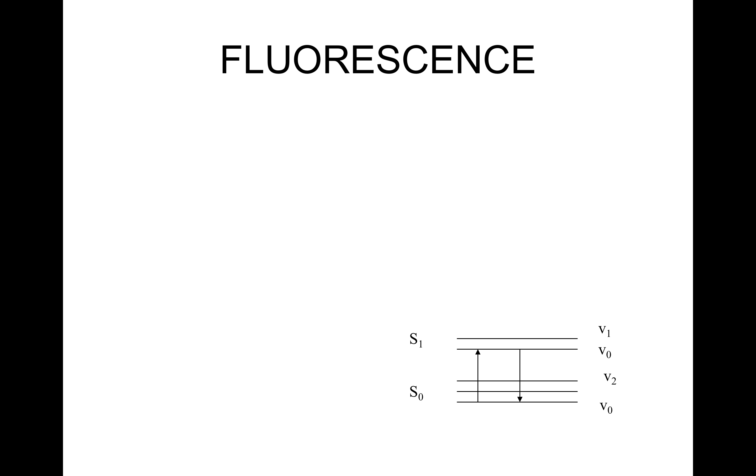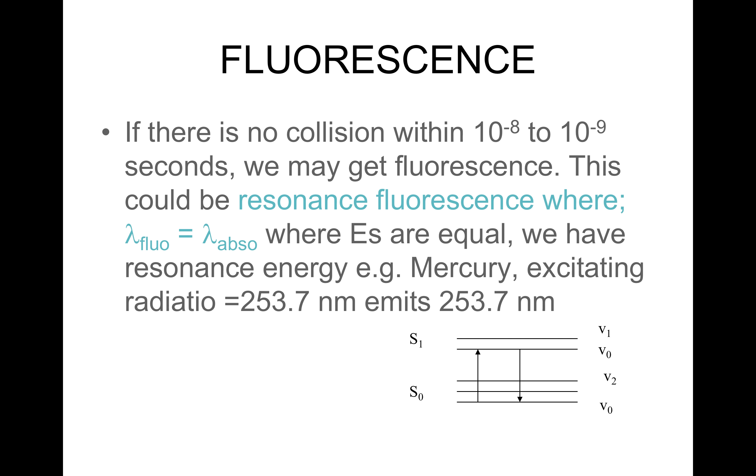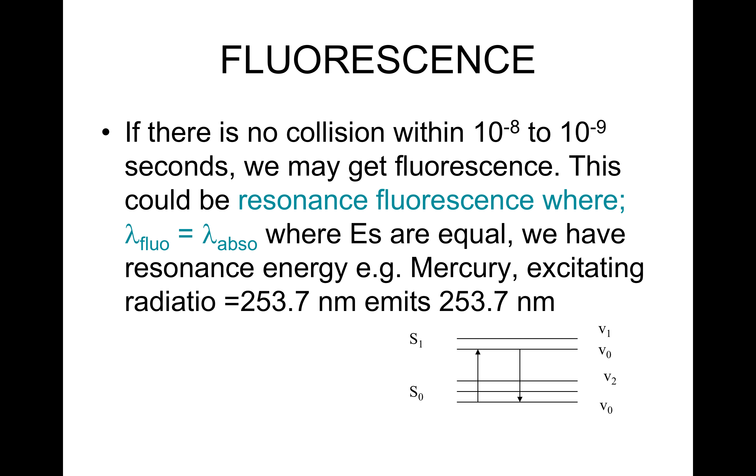Let us look at fluorescence in a little bit of detail. If there is no collision within 10 to the minus 8 to 10 to the minus 9 seconds, we may get fluorescence. This could be resonance fluorescence, where lambda fluorescence is equal to lambda absorption, where energies are equal. For example, we have resonance energy, e.g. Mercury-ray exciting radiation is 253.7 nanometers and emits radiation 253.7 nanometers, as shown in the diagram here.